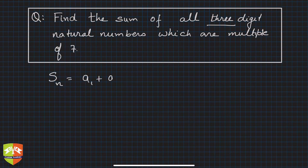This is what we need to find out: a1, a2, a3, and an. What are the criteria? All are three digit numbers as well as multiples of seven.